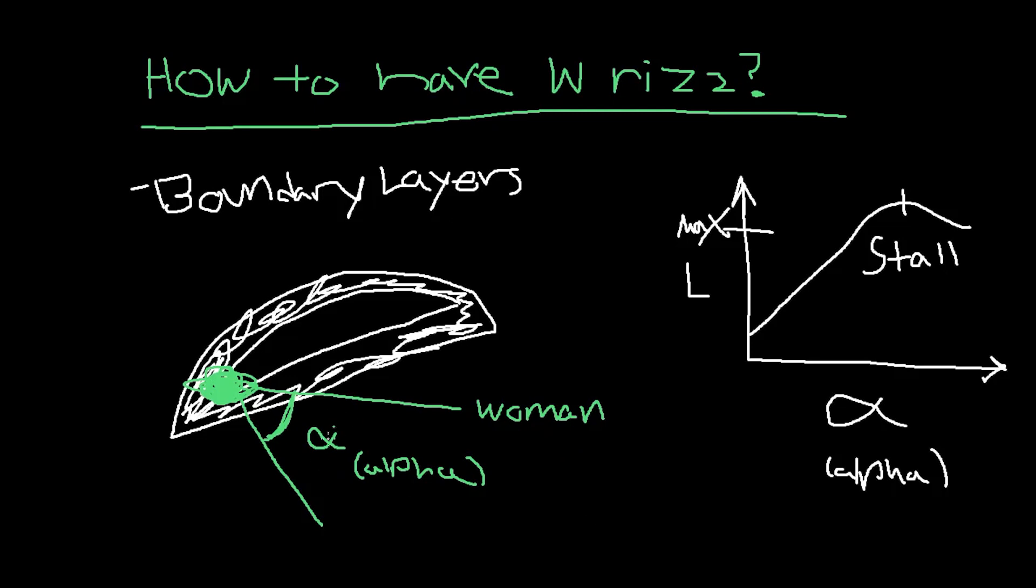So if you notice right here, let's change this. Let's say that this is 70 degrees, or it'll be 70 percent right here. This is whenever stall occurs.